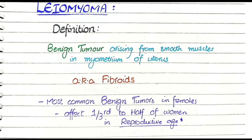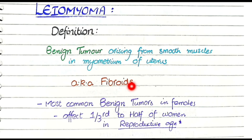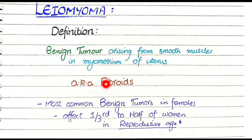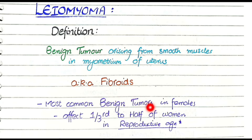These leiomyomas are also known as fibroids, so remember that fibroids are the same as leiomyomas. The most common benign tumors in females are leiomyomas or fibroids, and they affect one-third to half of women in reproductive age. These leiomyomas occur during the reproductive age, and I will tell you the reason in the later part.